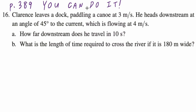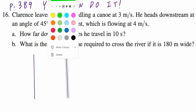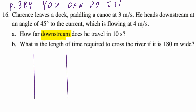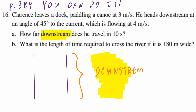Part A asks how far downstream does he travel in 10 seconds. Because of the keyword 'downstream,' the first step is to draw a diagram. What does the word downstream really mean? Downstream is from here all the way to here. The canoe is moving at 3 meters per second at 45 degrees, so we draw a vector starting from here at 45 degrees, labeled 45 degrees, at 3 meters per second.